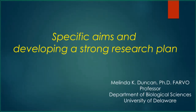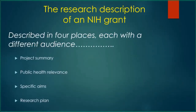There are, of course, other grants that have different formats. For the NIH research grant, you're actually writing about the topic of your grant in four different places and four different ways, and each of these places might not even be read by the same people — they each have a different audience. I'm going to walk you through what the four pieces are, what the audience is, and how that informs how you'll be writing those sections. Those four pieces are the project summary, the public health relevance, the specific aims, and the research plan.